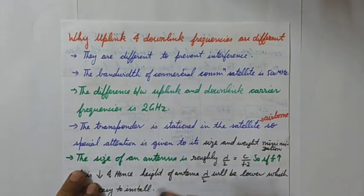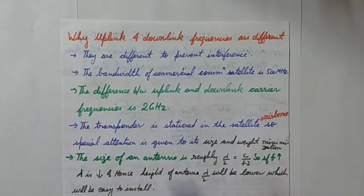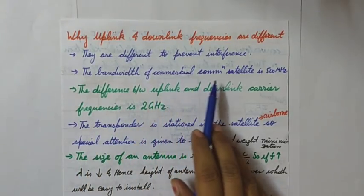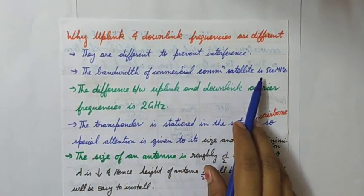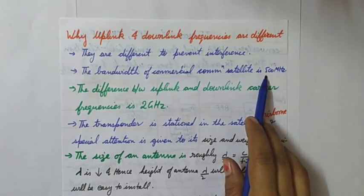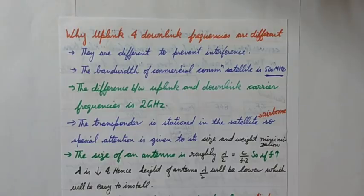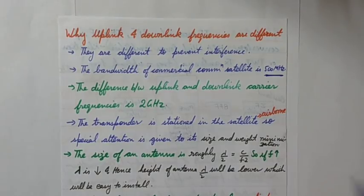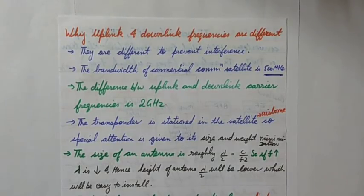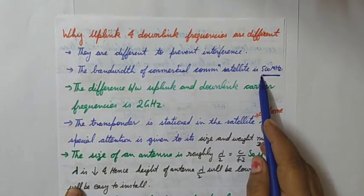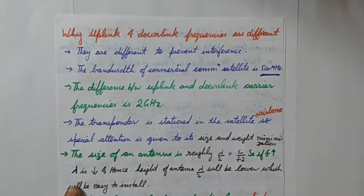First, they are different to prevent interference. Both frequencies cannot be same so that the problem of interfering or mingling is avoided. The bandwidth of a commercial communication satellite is 500 megahertz, so this is the bandwidth given in which the signals are to be transmitted - it can be video signals, data signals, voice signals, and different facilities are provided, but the bandwidth is 500 megahertz.